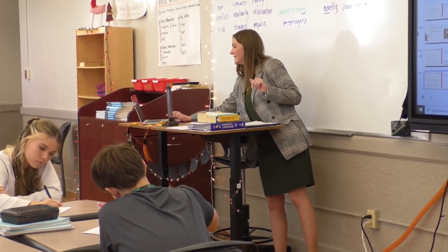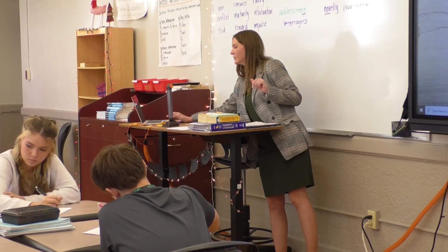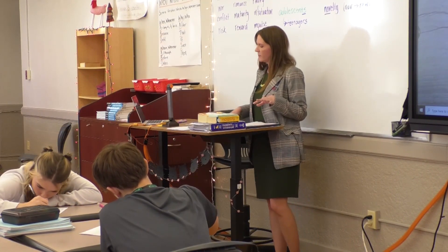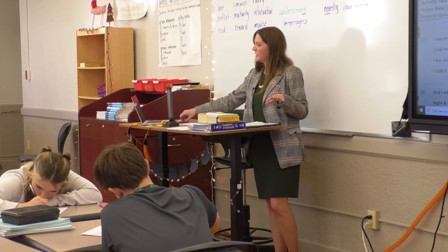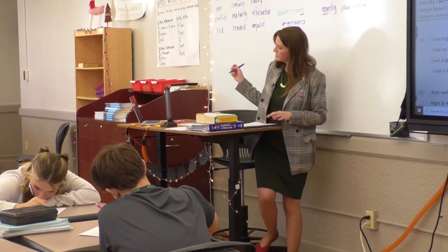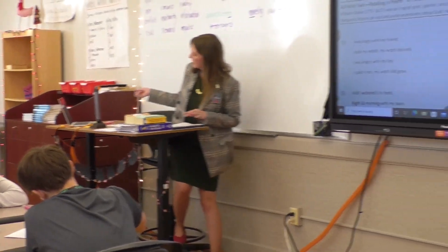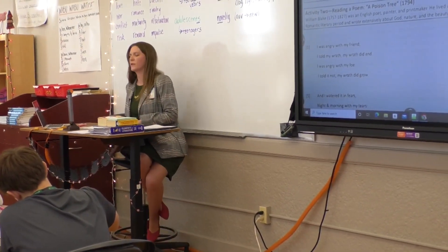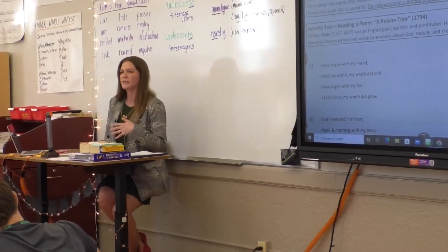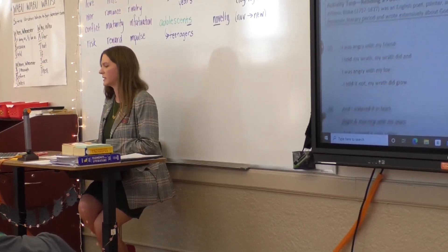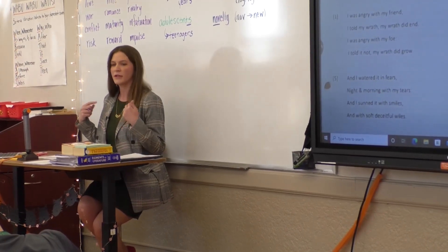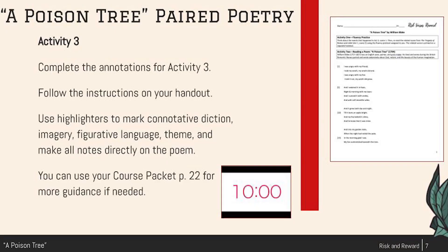We're going to annotate through the poem together, kind of step by step. Take your poem and a pencil. There are some words here that we might need to define or at least clarify in order to understand what's taking place. As I write, you write, and you're going to help me come up with what I need to add to the paper.